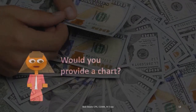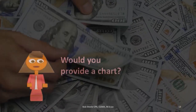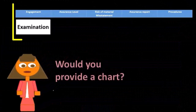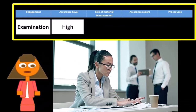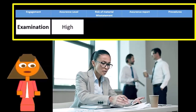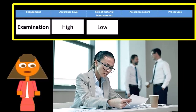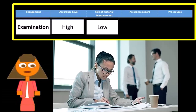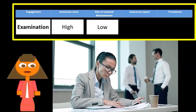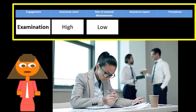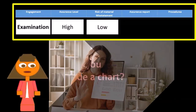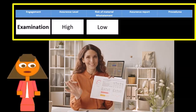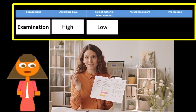Looking at a comparison chart: for an examination, the assurance level is high, meaning we're giving high assurance that the financial statements are correct. That means the risk of a material misstatement is low. If the financial statements have been audited, the risk of a material misstatement — one that would affect decision making — is low. Immaterial misstatements may still exist but shouldn't affect decision making.